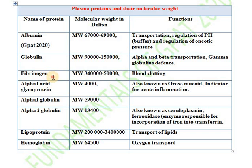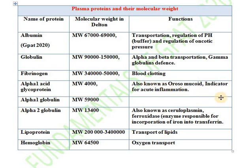Next plasma protein is fibrinogen. It has a molecular weight of 3.4 lakh to 5 lakh daltons and is involved in blood clotting. Then alpha-1 acid glycoprotein has a molecular weight of around 44,000 daltons. It is also known as orosomucoid and is an indicator for acute inflammation — its level increases in conditions like arthritis.